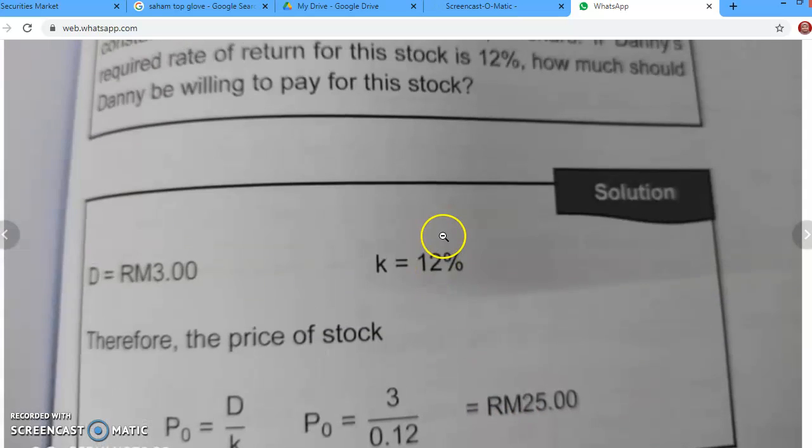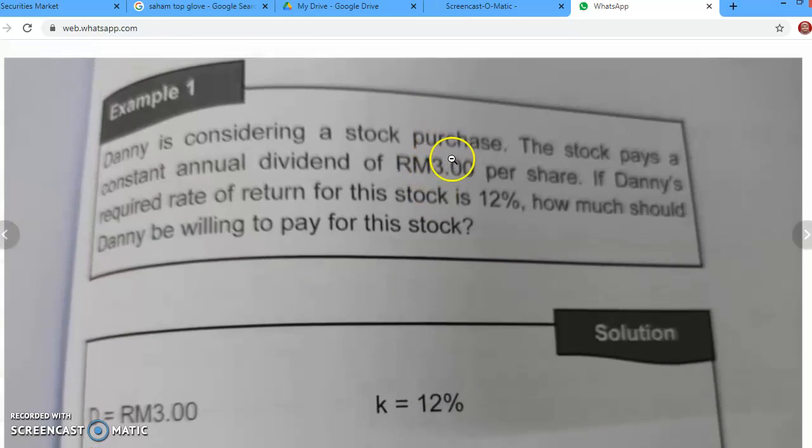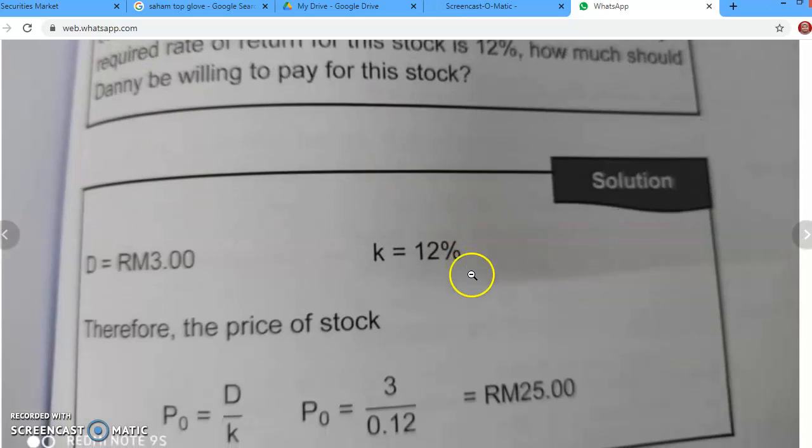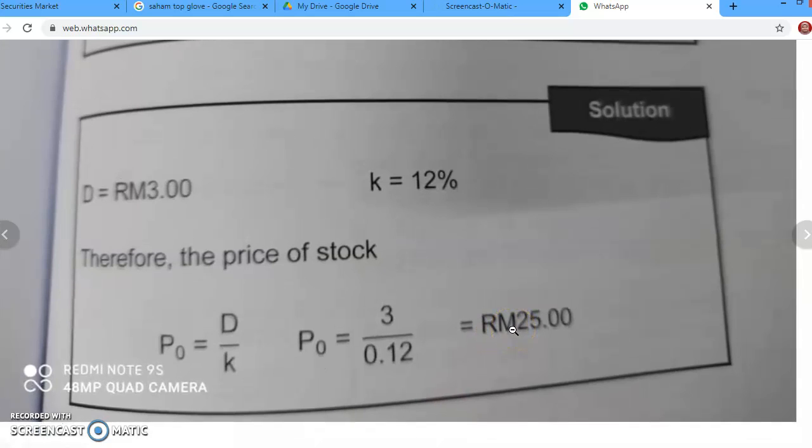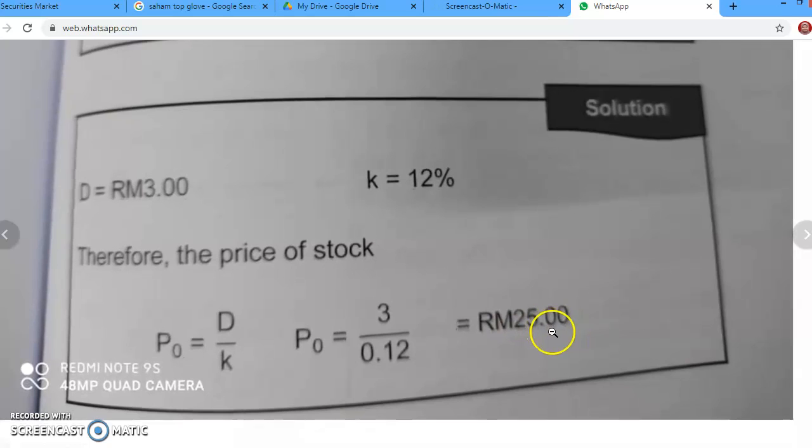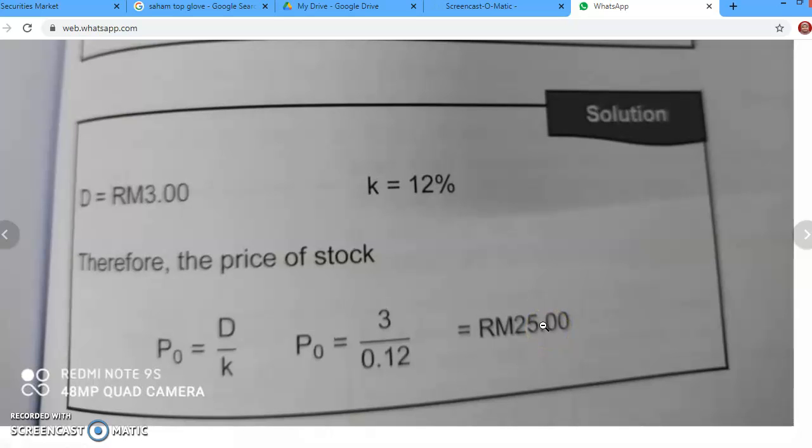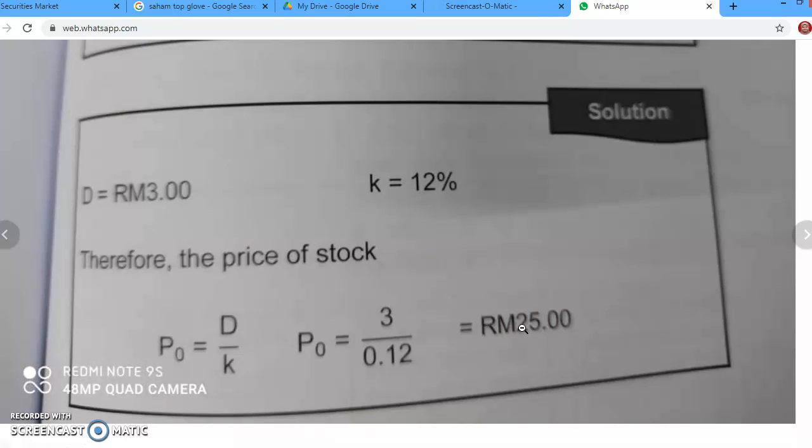Sebab kalau dengan target kita sebanyak 12% dan stock tu sedang bayar RM 3 dividend per share, simply put, kalau harga di pasaran sekarang RM 28, bila kita kira nilai dia sebenar hanyalah RM 25. So agak mahal, harga di pasaran agak mahal. So yang kita boleh bayar hanyalah setakat RM 25.